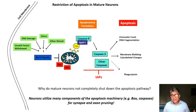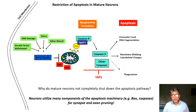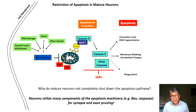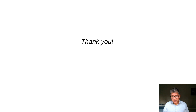To summarize: neurons utilize key components of the apoptotic machinery — BAX and caspases in particular — for synapse and axon pruning. This is the last slide of the apoptosis lecture. When you hear about caspases, apoptosome, or the BCL2 family proteins, I hope you'll remember what these proteins do and perhaps study these pathways in your future research. Thank you all, and thank you to Dr. Shika LaLoria for inviting me to give this lecture.